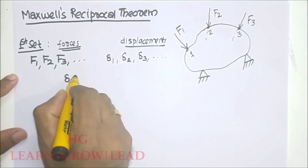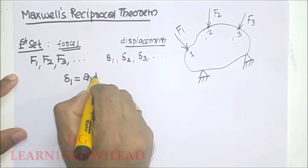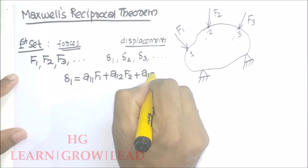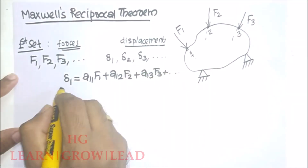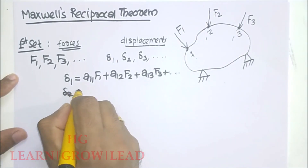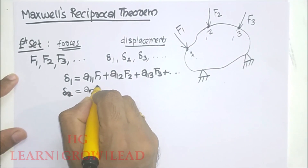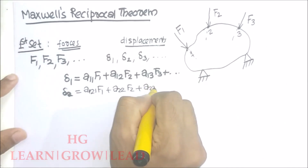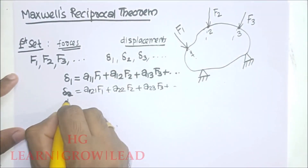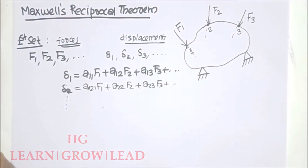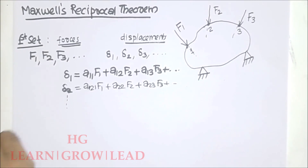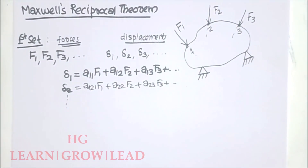Similarly, delta2 can be written as A21·F1 + A22·F2 + A23·F3 + etc. We have n displacement equations in terms of influence coefficients and displacements. In lecture 1 we discussed influence coefficients and displacement.